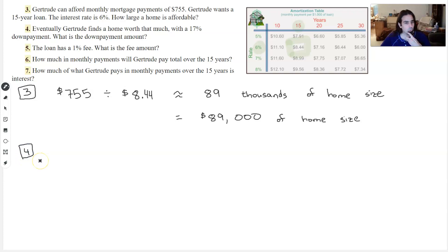Eventually she finds a home worth that much. There's a 17% down payment. So percent of, we multiply. We're going to take the 17%, scoot the decimal place twice to the left to get out of percent.